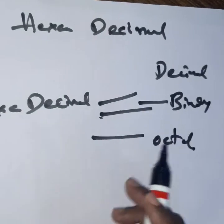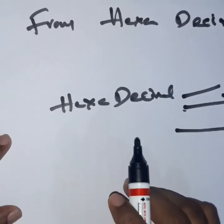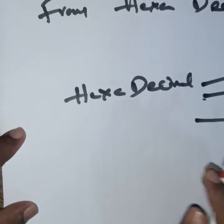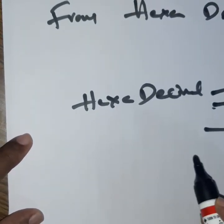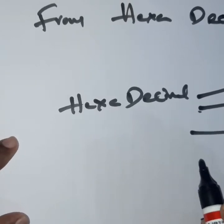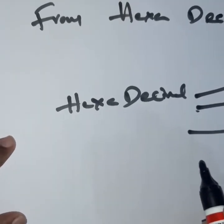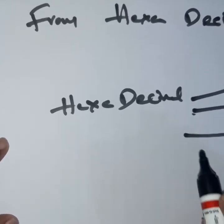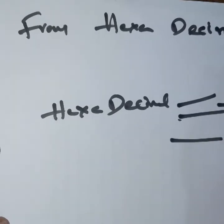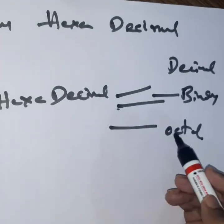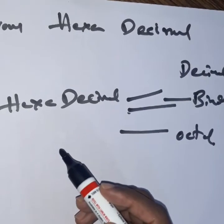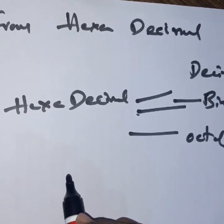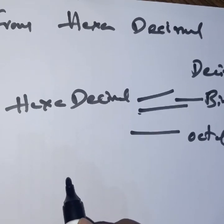So like this, we take a number from one number system and convert it to another number system. So many conversions are possible. For each conversion — like hexadecimal to decimal, binary to hexadecimal, octal to hexadecimal, or octal to decimal — I will create a separate video and explain with an example. Thank you for today.